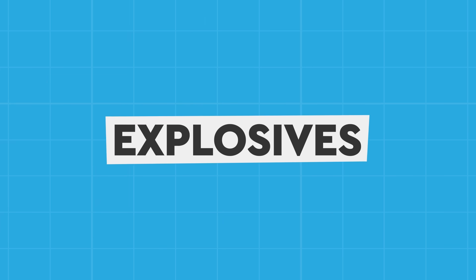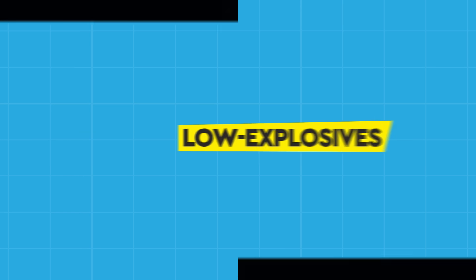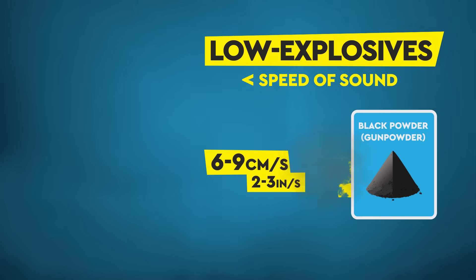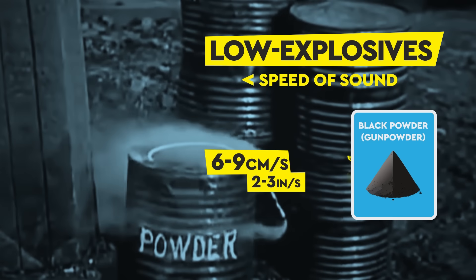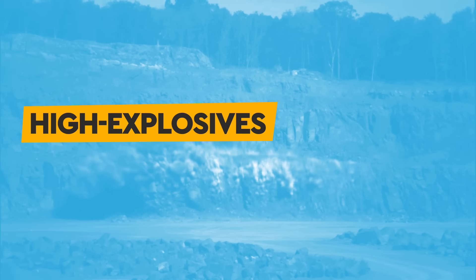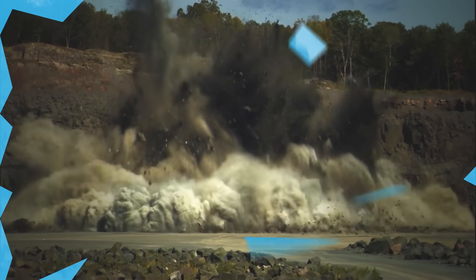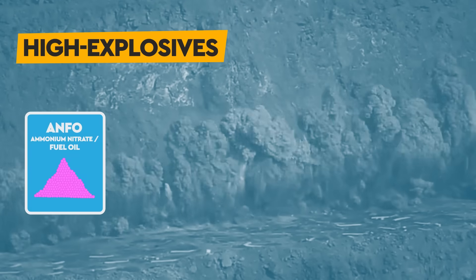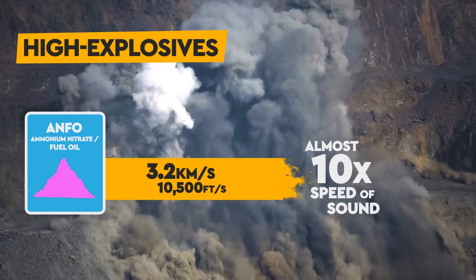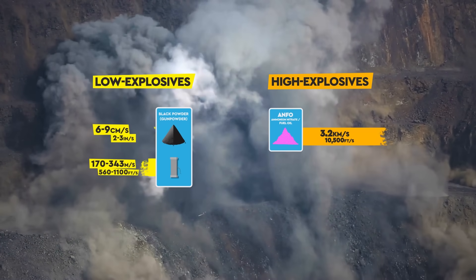When it comes to chemical explosives, the aforementioned increase in volume is achieved via a chemical reaction that results in the rapid production of gas, which very quickly expands. Et voila, you have an explosion. Broadly speaking, explosives fall into one of two groups, based on how quickly the chemical reaction happens. Low explosives explode at a rate slower than the speed of sound, ranging from a few centimeters per second, right up to the speed of sound at 343 meters per second. High explosives, on the other hand, explode faster than the speed of sound, and usually much faster.